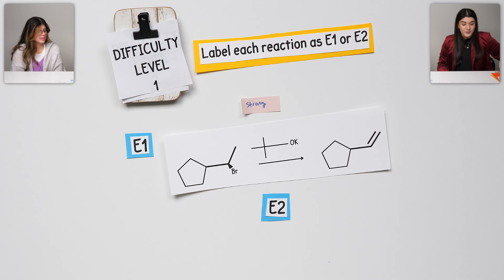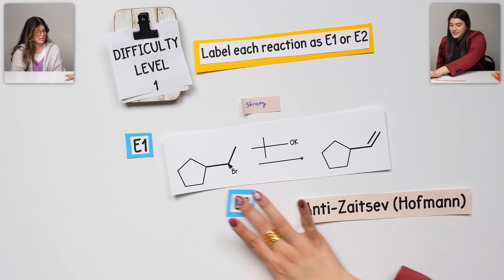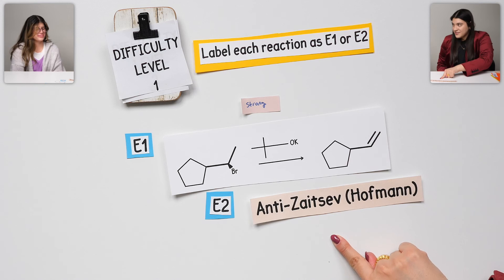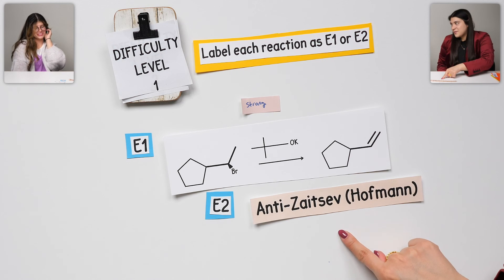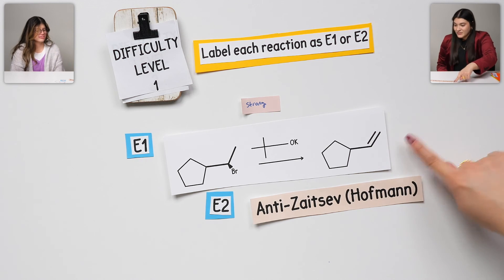And then, yes, you are correct. This would have been Hoffman's product. Yes. Or anti-Zaitsev's. And it's the less substituted alkene that is the major product. That's true. Good.